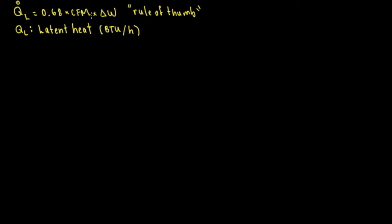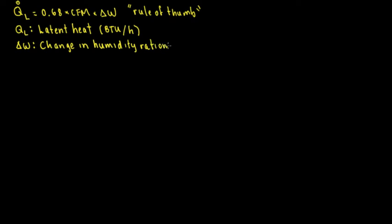CFM is cubic feet per minute, and the other variable is delta W. Delta W is a change — anything delta is a change — so this change is going to be in humidity ratio. W is humidity ratio. For the rule of thumb, the units are going to be grains per pound of dry air.